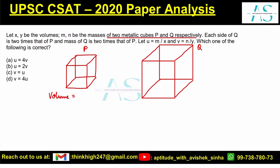Volume of P is x and the volume for Q is y. Let's call the side as P and Q. Each side of Q is two times the side of P, so can I say Q is exactly equal to 2P.